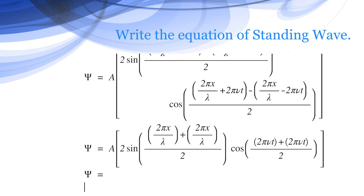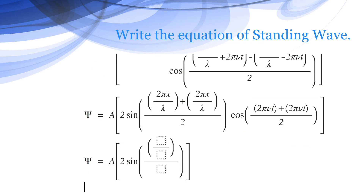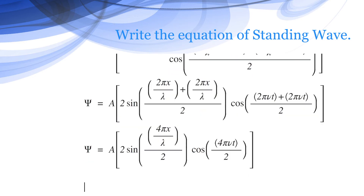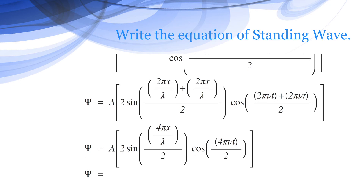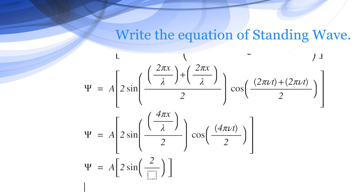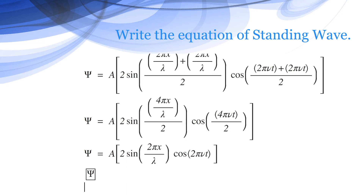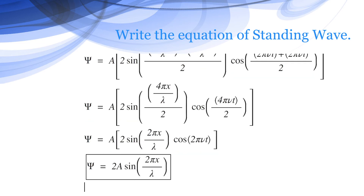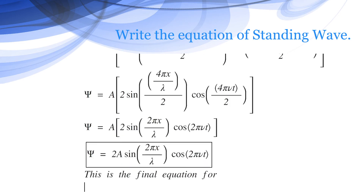Combining, it becomes A times 2 sin(4pi x / lambda / 2) cos(4pi nu t / 2). Cancelling 4 with 2, the equation becomes psi equals A times 2 sin(2pi x / lambda) cos(2pi nu t). So the final equation is psi equals 2A sin(2pi x / lambda) cos(2pi nu t). This is the final equation for the standing wave.